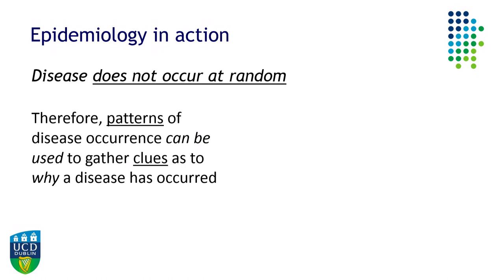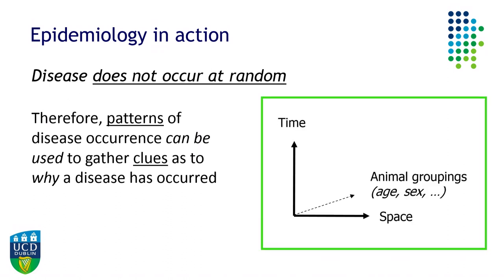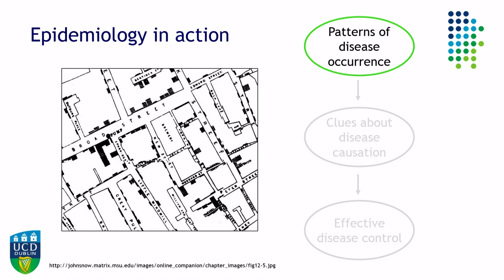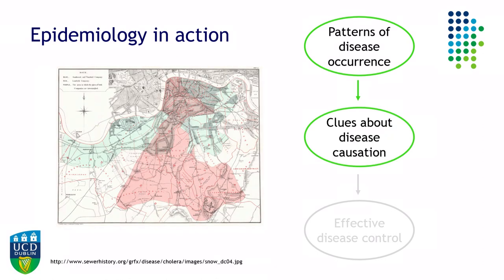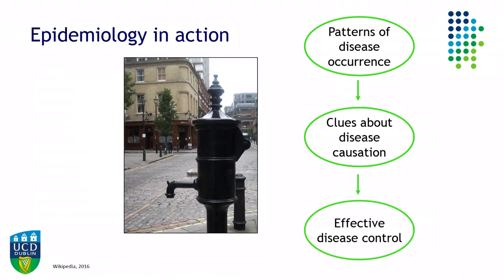The key principle of epidemiology that's important in practice is that we work based on the assumption that disease does not occur randomly, and therefore, if there are patterns, those patterns can provide clues to help us understand why. The key words are patterns and clues. The patterns we're interested in are in different dimensions — whether in time, between different animal groupings, or in space. John Snow identified patterns in space, which gave him clues about disease causation and provided the opportunity for effective disease control.